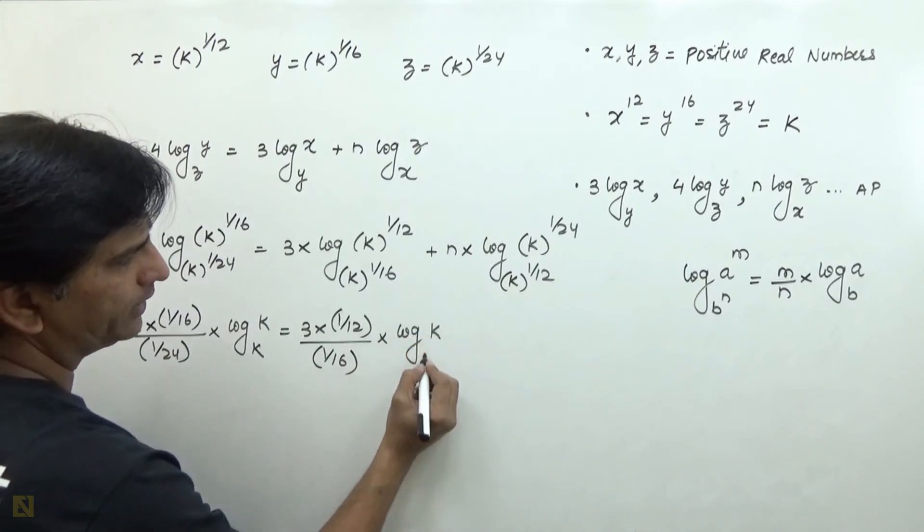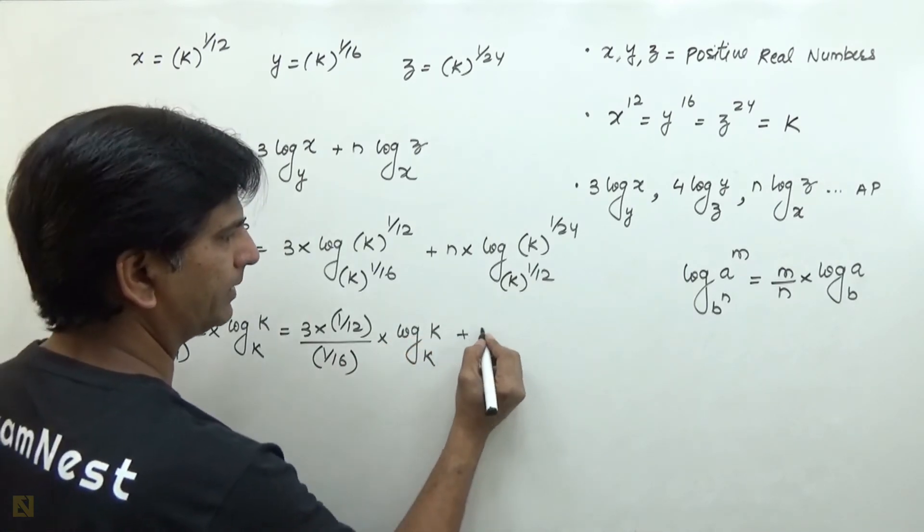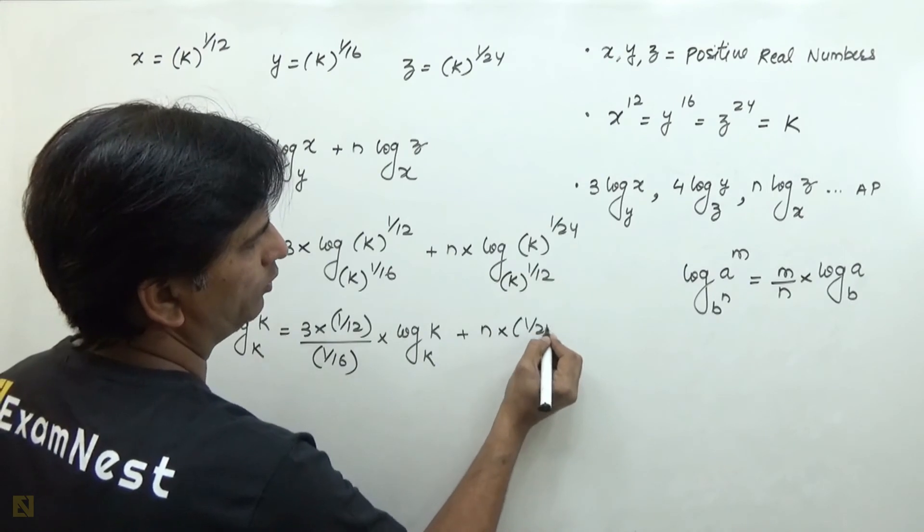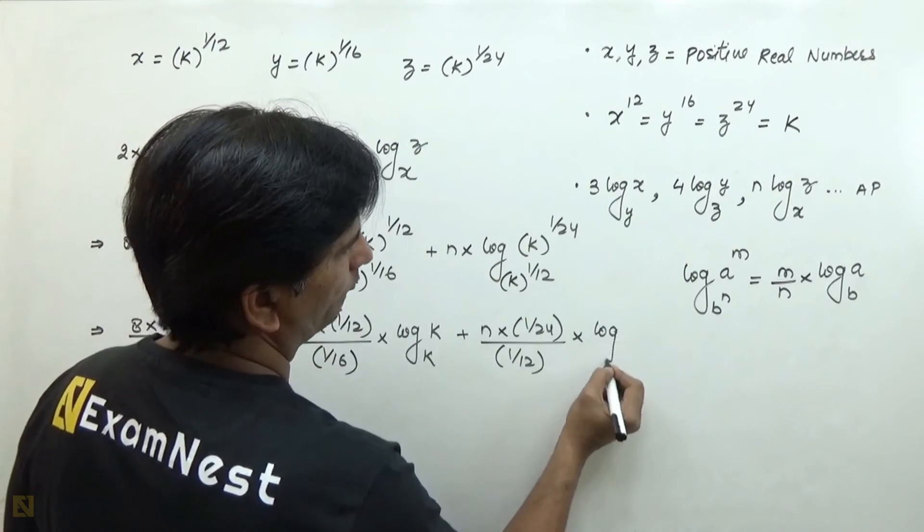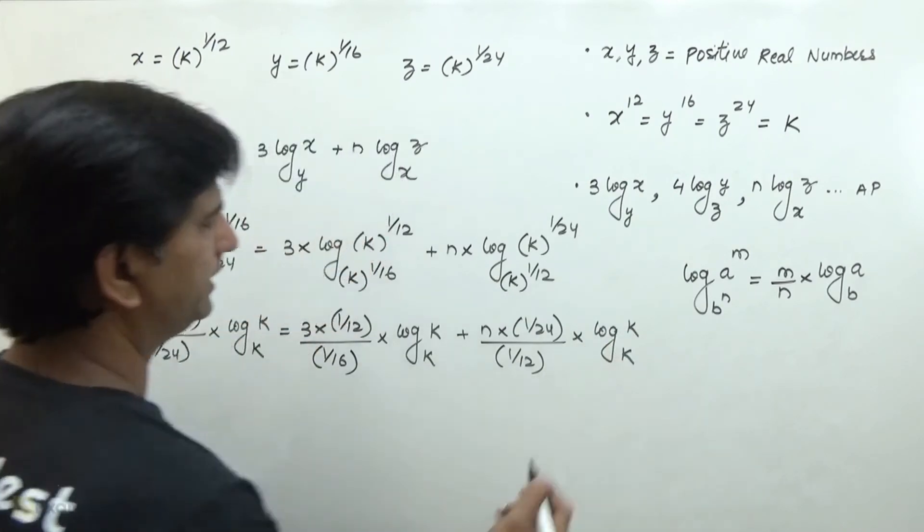into log of k to the base k, plus n into 1 over 24 divided by 1 over 12 into log of k to the base k.